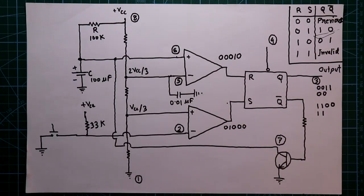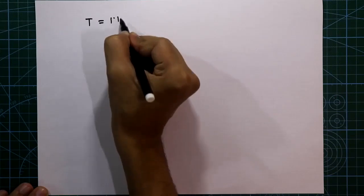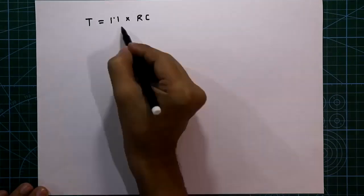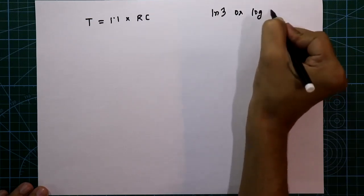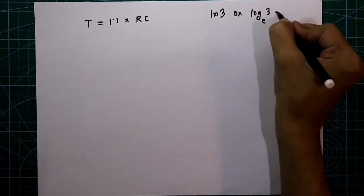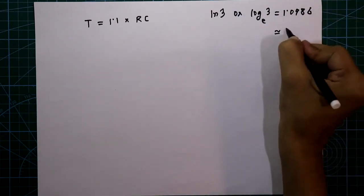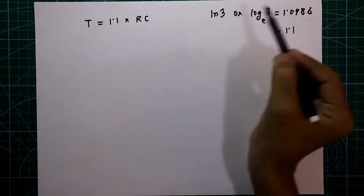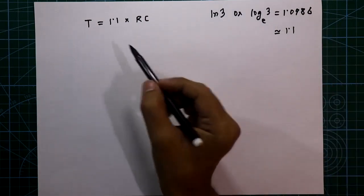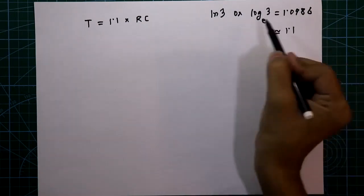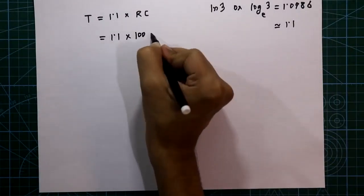We have to find the activated output time. The formula is T = 1.1 × RC. The 1.1 value comes from ln(3), which is log base e of 3. The value of ln(3) is 1.0986, approximately equal to 1.1, because the capacitor charges exponentially.